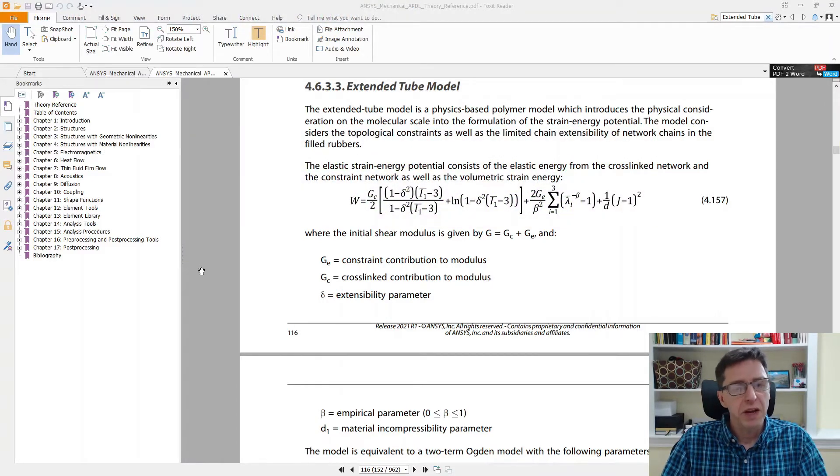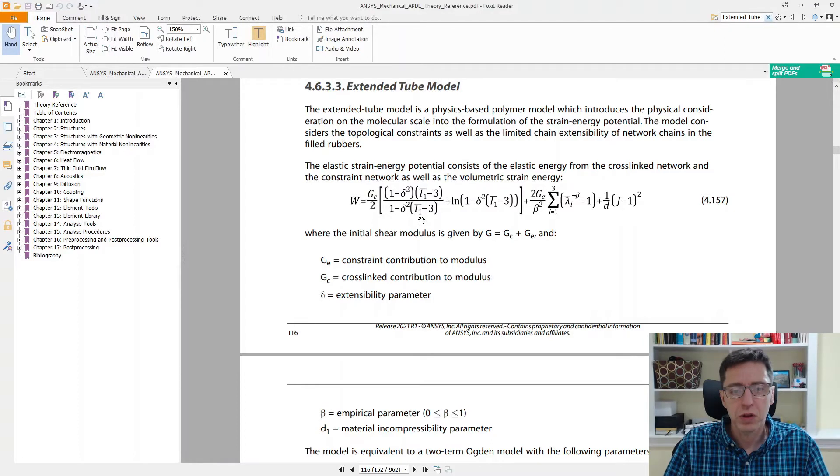For those not familiar with the Extended Tube Model, this is a material model that was developed a number of years ago for rubber-like materials and was intended to be more accurate than some of the other material models out there. If you look at the ANSYS documentation, you will see that it has a relatively complicated strain energy function. There are four parameters plus a compressibility parameter d. There are two modulus type parameters GE and GC, and there's a delta and a beta parameter. By looking at this, it's not so obvious at first sight what these parameters do and how they influence the response.